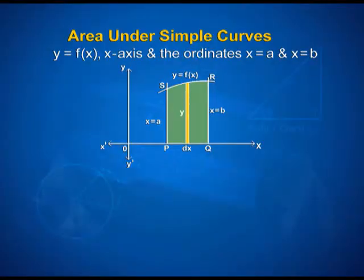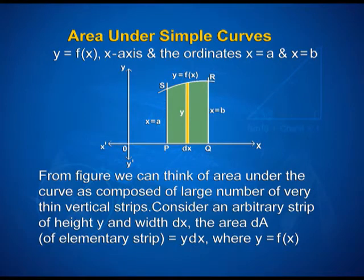In the previous chapter, we have studied the definite integral as the limit of a sum and how to evaluate the definite integral using the fundamental theorem of calculus. Now we consider the easy and intuitive way of finding the area bounded by the curve y = f(x), the x-axis, and the ordinates x = a and x = b. From the figure, we can think of the area under the curve as composed of a large number of very thin vertical strips.